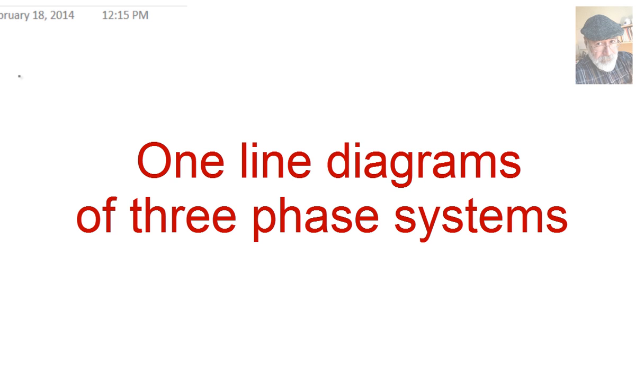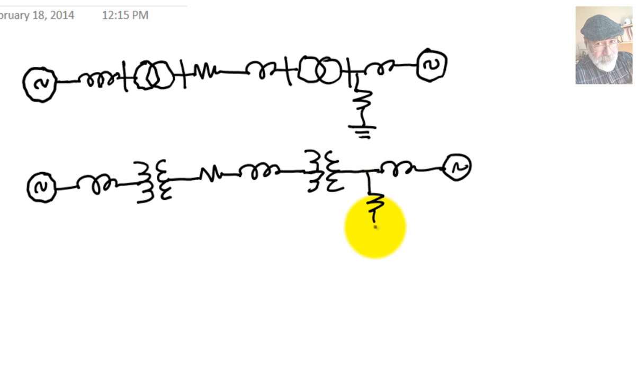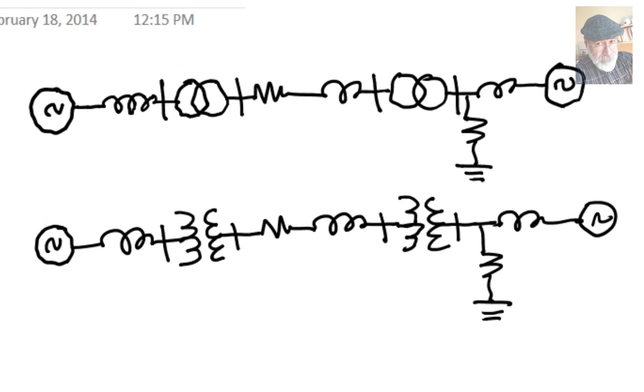Let's explore one-line diagrams of three-phase systems. Like this one. Or, alternatively, we could draw these transformers, this one and that one, with the alternative notation.